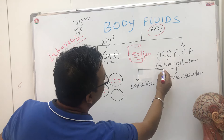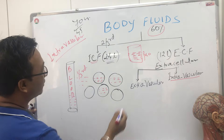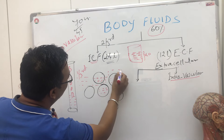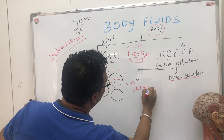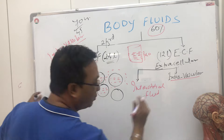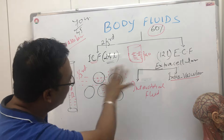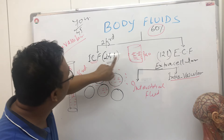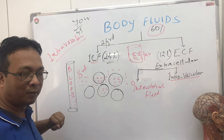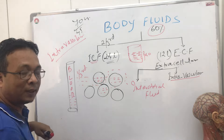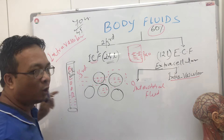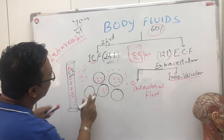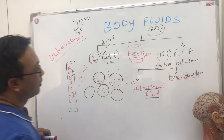Extracellular fluid has two main compartments: intravascular fluid — the blood inside the blood vessels — and interstitial fluid, which is the fluid present around the cells, not inside them. Normally we have four to five liters of blood. The fluid in the interstitial space surrounding cells is called interstitial fluid.